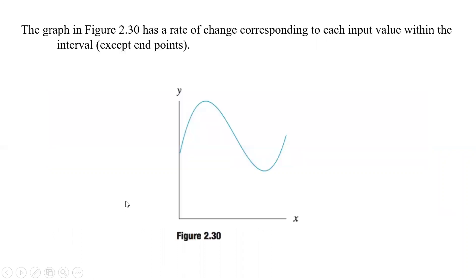Let's look at a couple of figures and see whether we can find a proper rate of change — that is, whether f prime of x exists. In Figure 2.30, there is a rate of change corresponding to each input value within the interval. We can find that rate of change over the whole interval except for the endpoints, because on open intervals we can't go from the left or from the right at those exact endpoints.